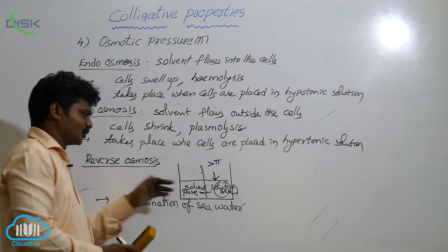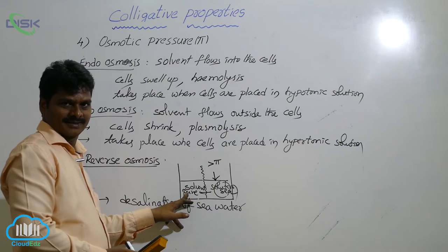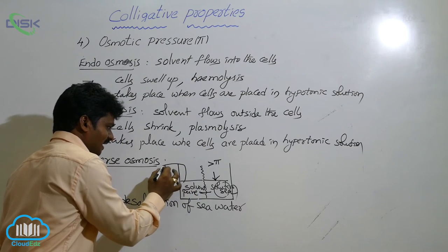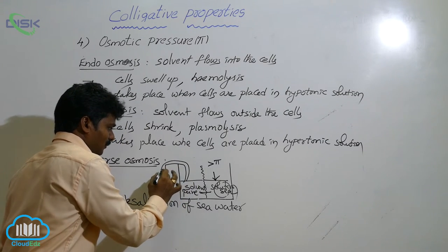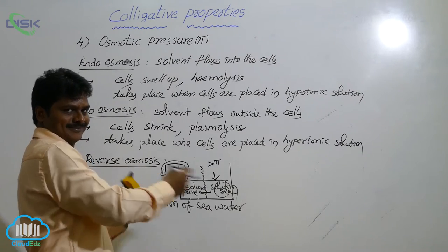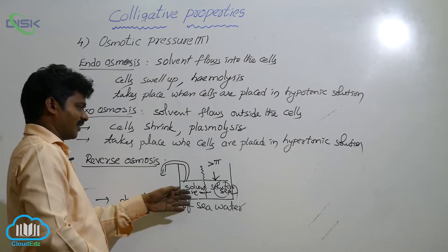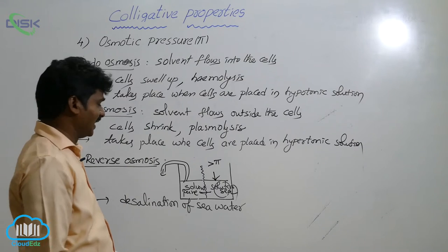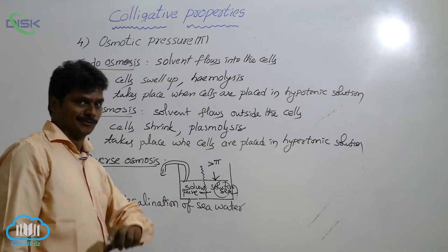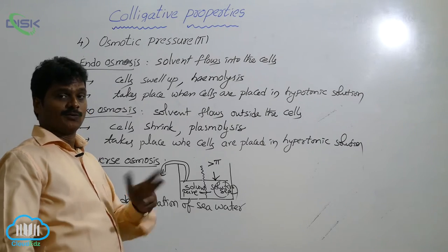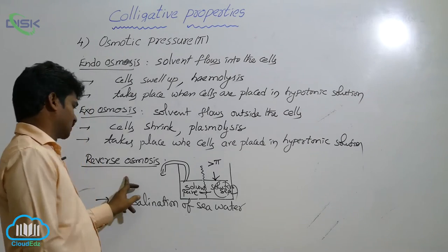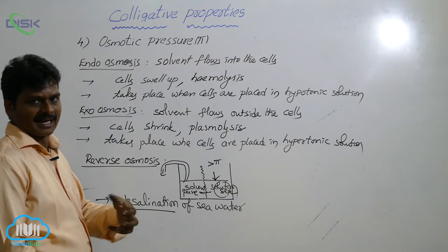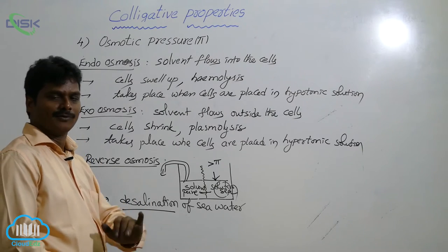When pressure greater than osmotic pressure is applied to the seawater side, pure solvent moves from the solution to the pure solvent side. The increased solvent is taken out continuously, so the process runs continuously and pure water is obtained from seawater. This process of removing salts from seawater is called desalination.